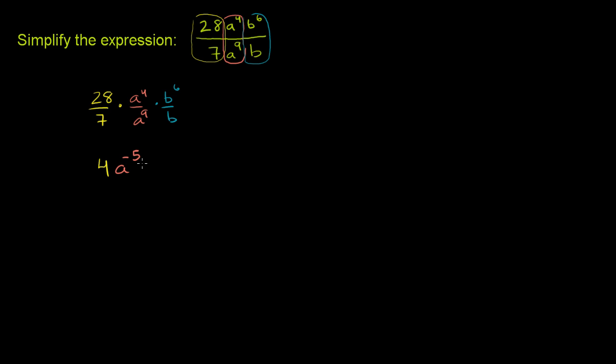And the same thing here with the b's. Times b, 6 minus, you have a 1 here. You don't see the 1, but it's there. If you just have a b, that's the same thing as b to the 1 power. So b to the 6 divided by b to the 1 power is b to the 6 minus 1, or b to the fifth power.